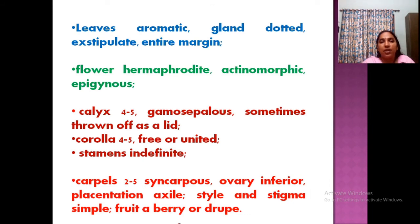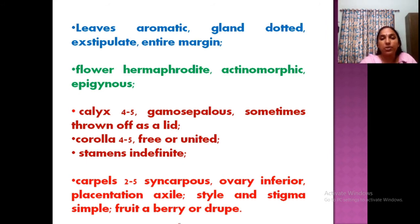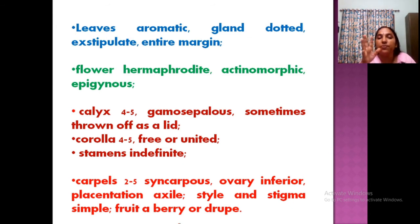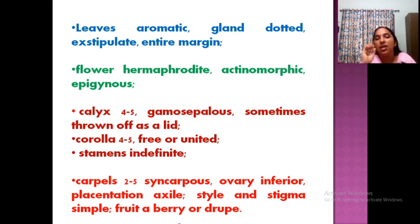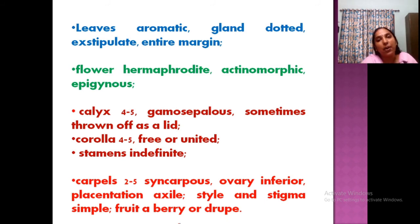Briefing the important features: leaves are aromatic, gland-dotted, and exstipulate. Flowers are bisexual and actinomorphic. Calyx gamosepalous, usually thrown off as a lid, four to five in number. Corolla again four to five. Stamens are infinite — that is an important point. Carpels are two to five, syncarpous, inferior or superior, with axile placentation. Style and stigma are simple. Fruit is a berry, drupe, or nut. These are the typical features of family Myrtaceae.